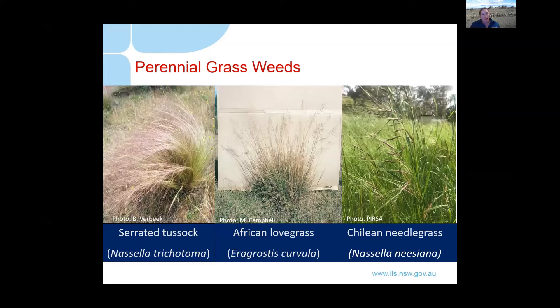Moving on to our perennial grass weeds — the trifecta we are dealing with down on the Monaro. They all have their own unique areas where we tend to have more of a problem with them: serrated tussock, African lovegrass, and Chilean needle grass. Notably, serrated tussock and Chilean needle grass are both Nassella species, so they're actually related to each other.